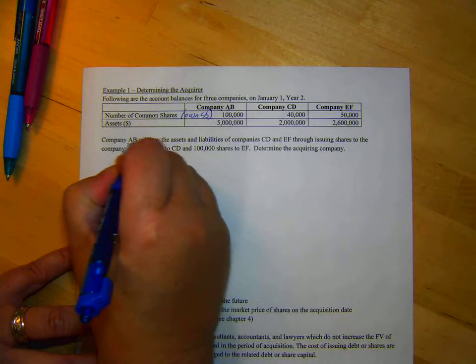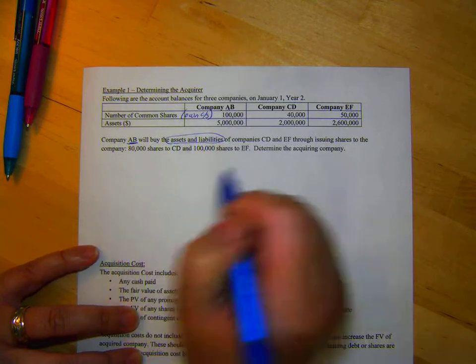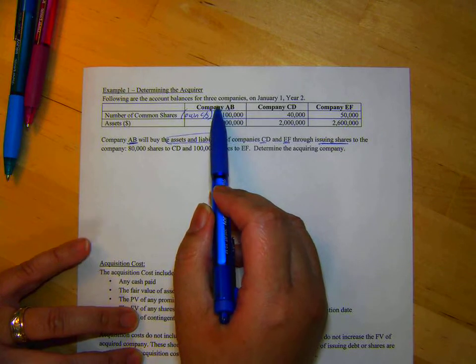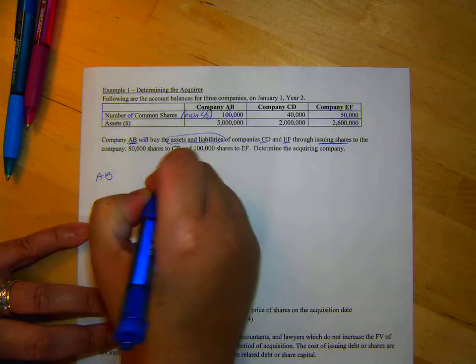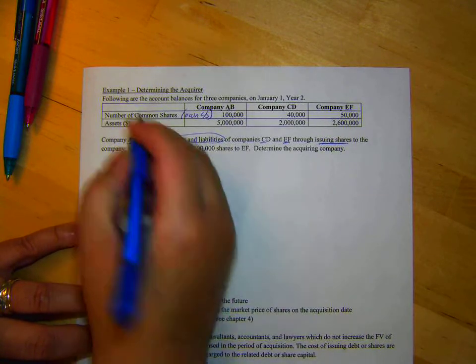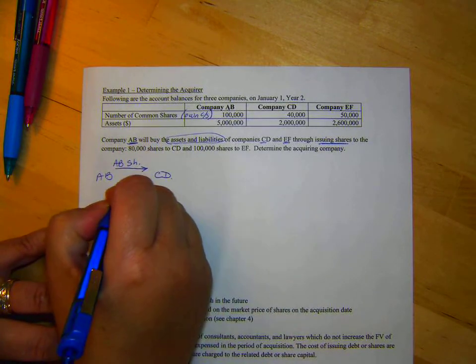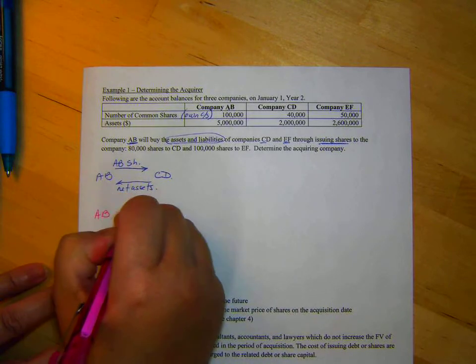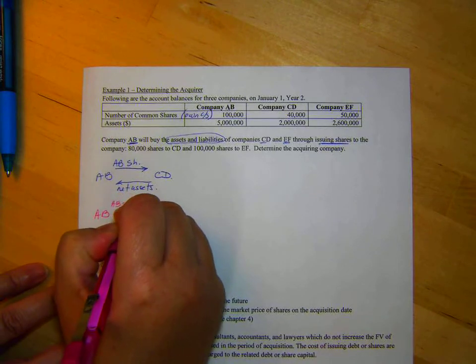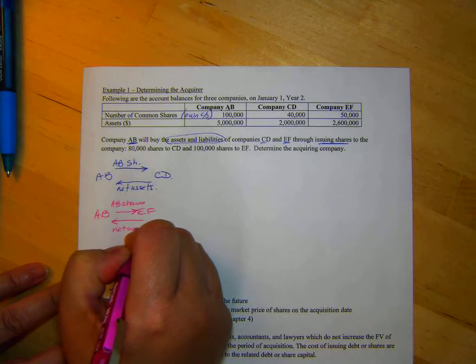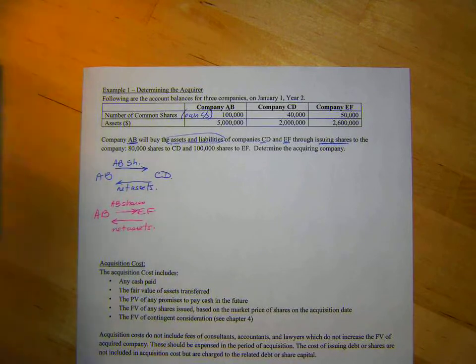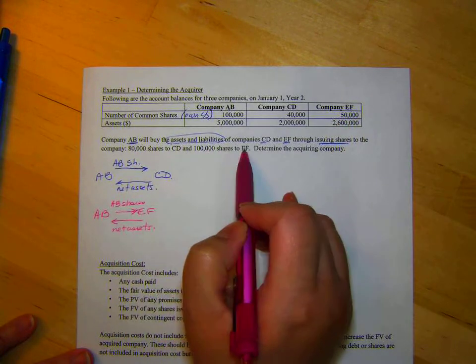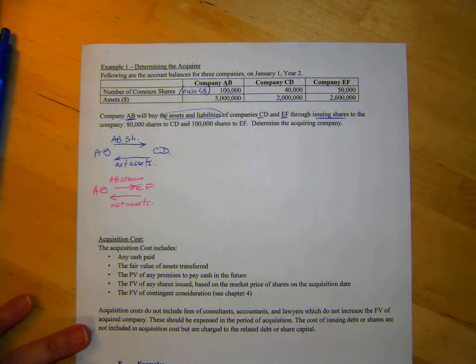So, Company AB is going to buy the net assets, so assets and liabilities, of Company CD and EF by issuing shares to the company. Now, they're going to pay these guys with their own shares. So, I'm just going to draw it out. AB is going to give CD AB shares, and they're going to buy the net assets. AB is going to give EF, their own shares, for their net assets. So, they're going to give 80,000 to CD and 100,000 to EF of their own shares. We want to know who the actual acquiring company is.